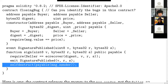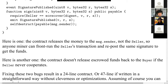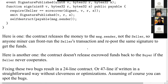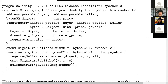Another, much easier to understand bug: what happens if the seller never signs? The money stays in the contract forever and the buyer never gets it back. You need a timeout mechanism to ensure the buyer gets his money back if the seller never signs. These problems can be solved — instead of a 17-line program we could have a 24-line program, or 47 lines if you write it straightforwardly without optimization. In 47 lines you could have a correct version of this contract.